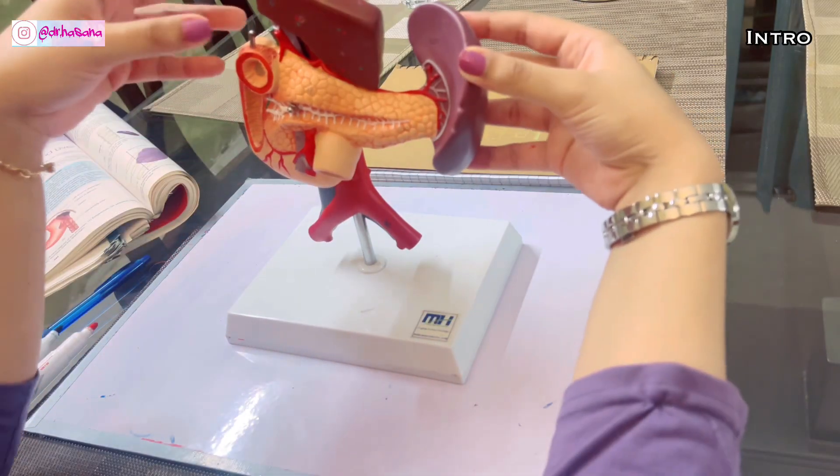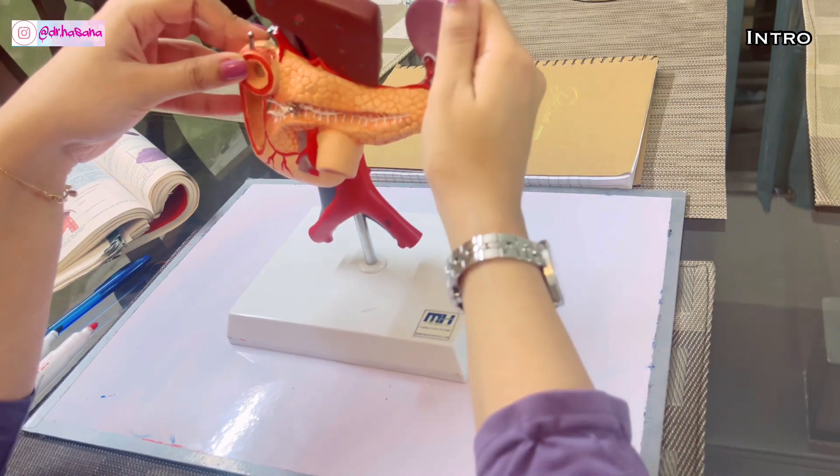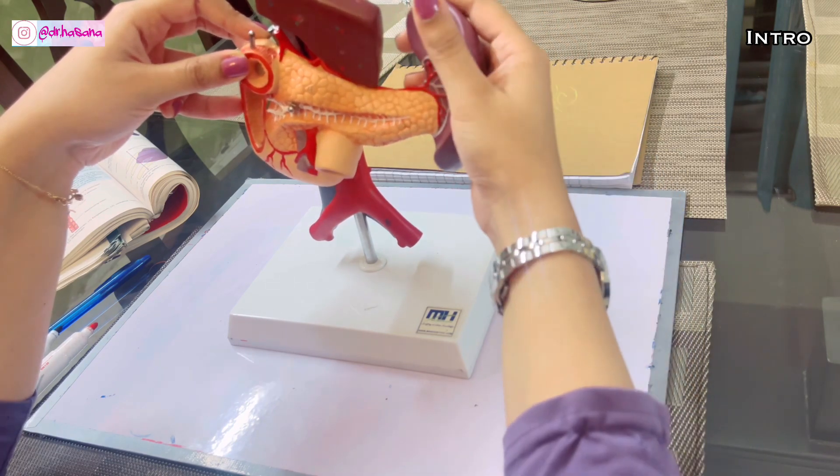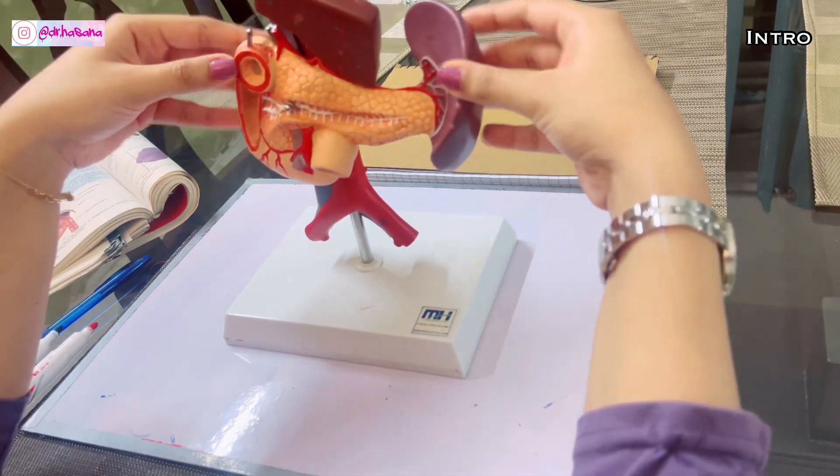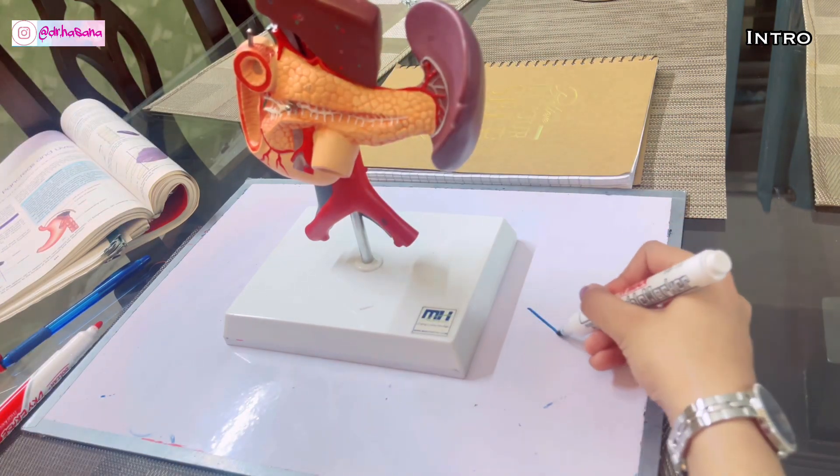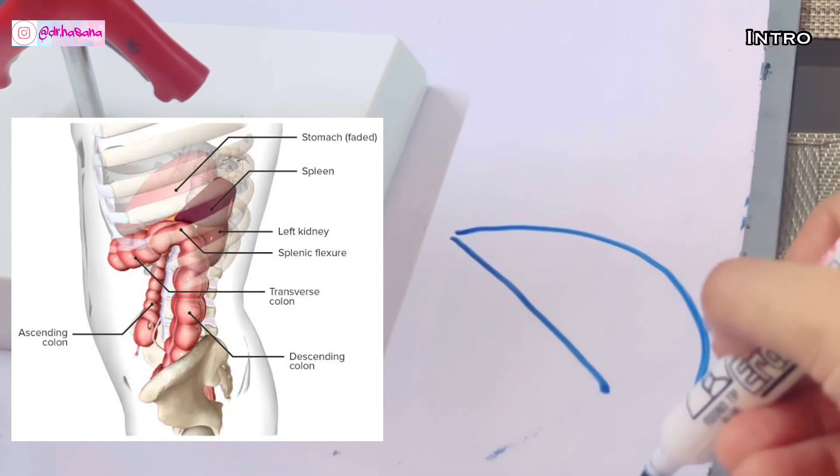Today, we're discussing this organ right here at the left side of the abdomen. This is known as the spleen. It's a wedge-shaped organ. We're going to be discussing the anatomy of the spleen in 3D.